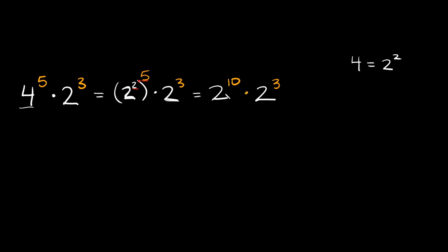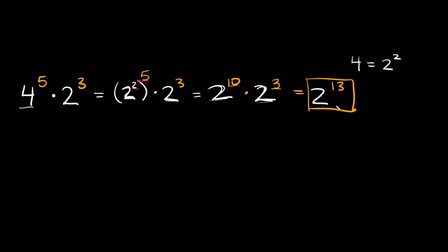Now how do we multiply these together? Whenever you have two numbers with the same base, all you have to do is add the exponents together. Since we have a two here and a two here, you just keep the two, and then add the exponents: ten plus three equals thirteen. So your answer is two to the thirteenth power. If you wanted an actual number, you could plug this into your calculator — two raised to the thirteenth power equals 8,192.